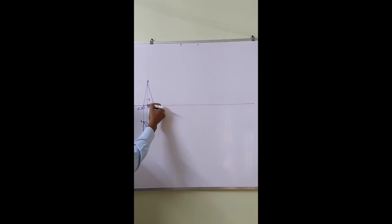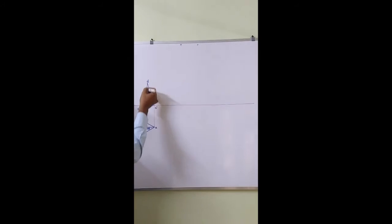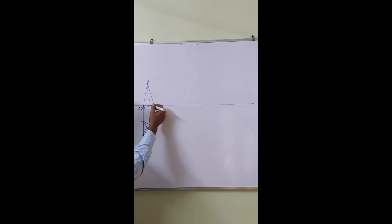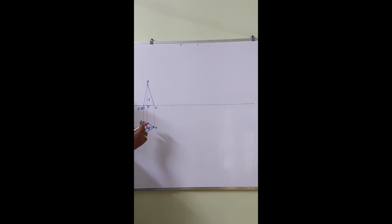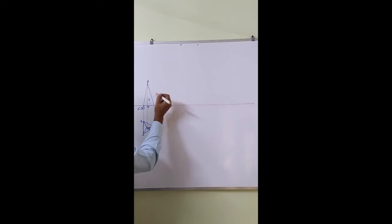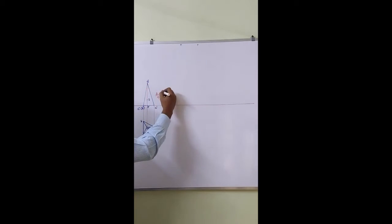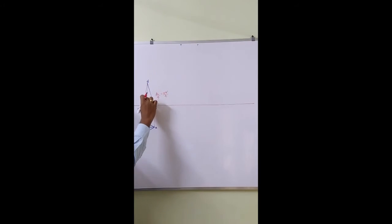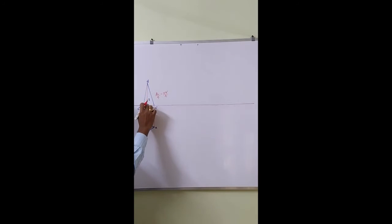The center of gravity G will be at a distance or height of h by 4 from the base, and it will be on the axis. The axis will be at h by 4 distance from the base. So 70 divided by 4, we will mark that distance from the base. That is G.